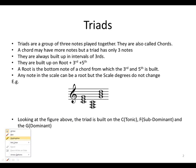What are triads? Triads are a group of three notes played together, so it's one on top of the other. They are also called chords. Now, a chord may have more notes, but a triad has only three notes. They are always built up in intervals of thirds. They are built up on root, third, and fifth. A root is the bottom note of the chord, from which the third and the fifth is built.